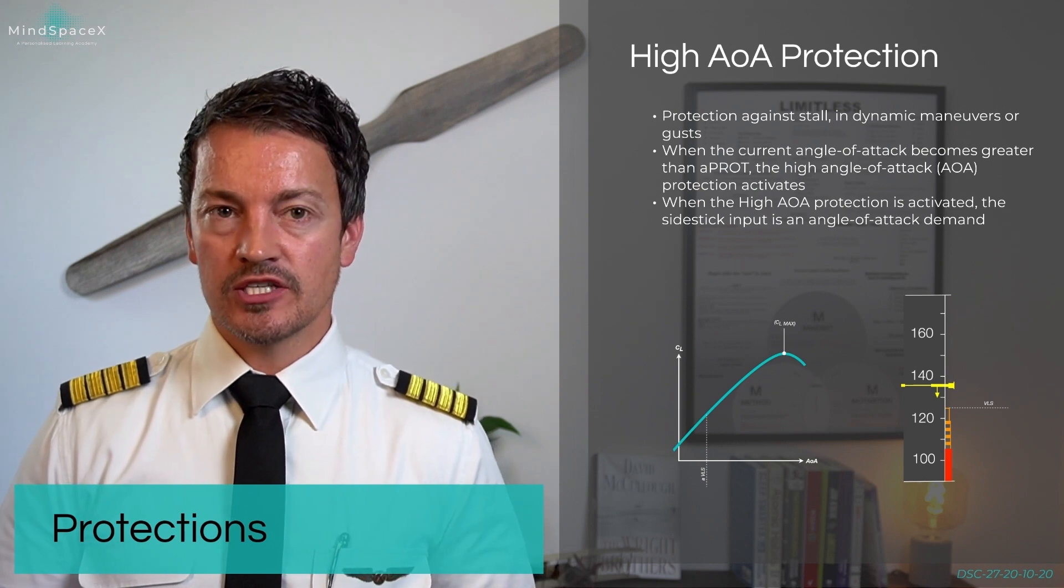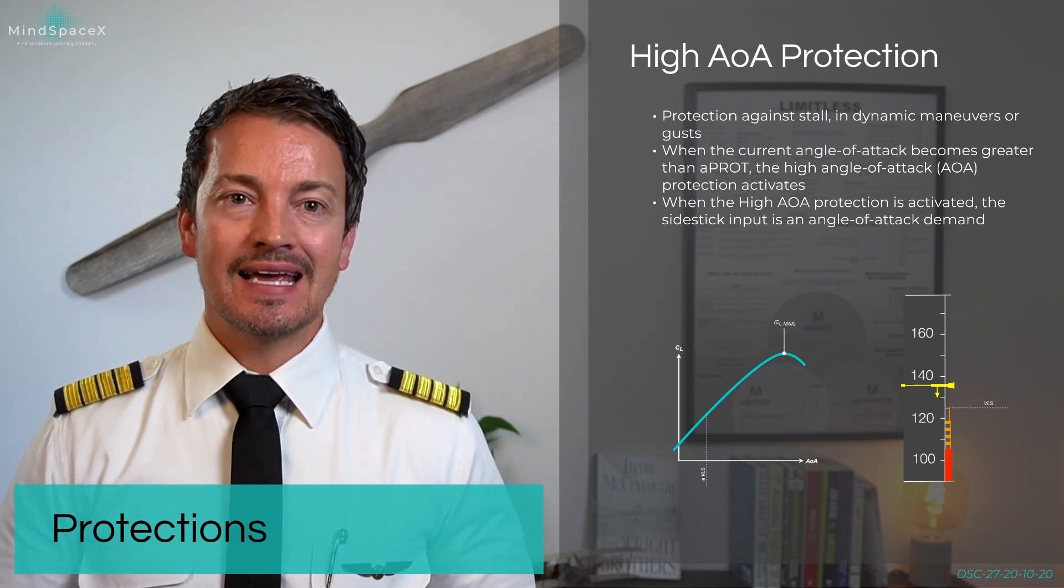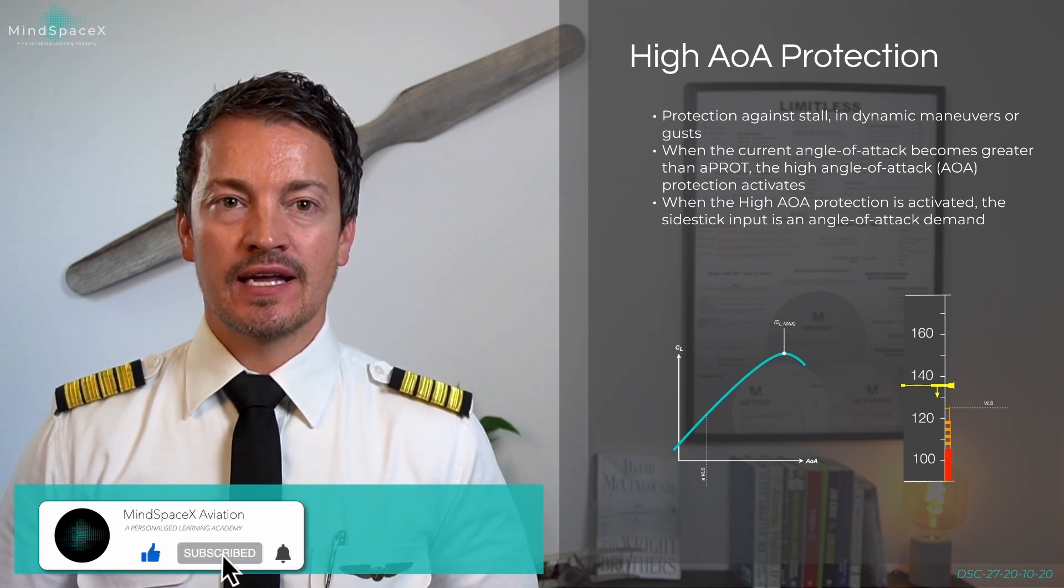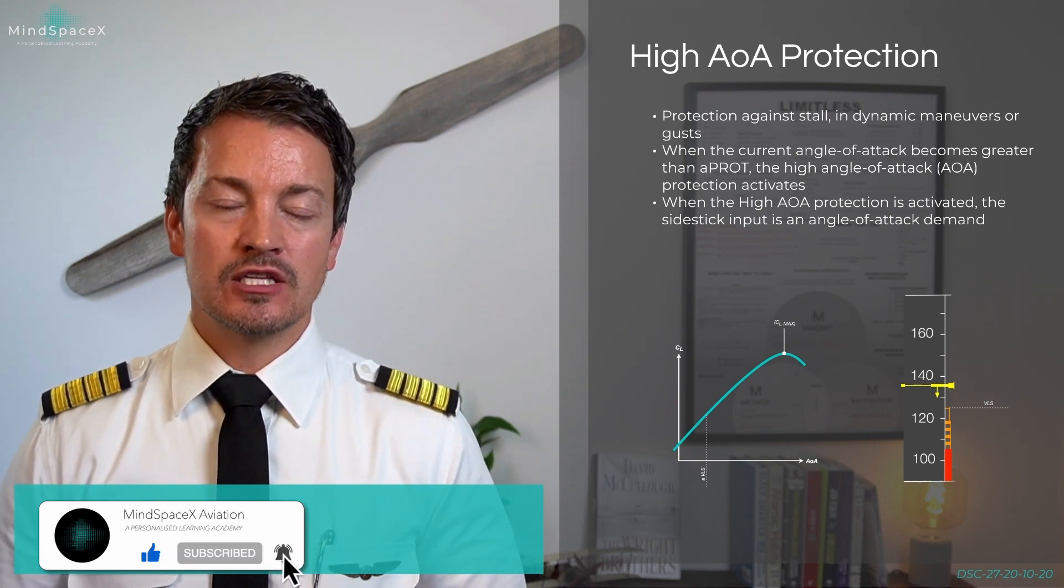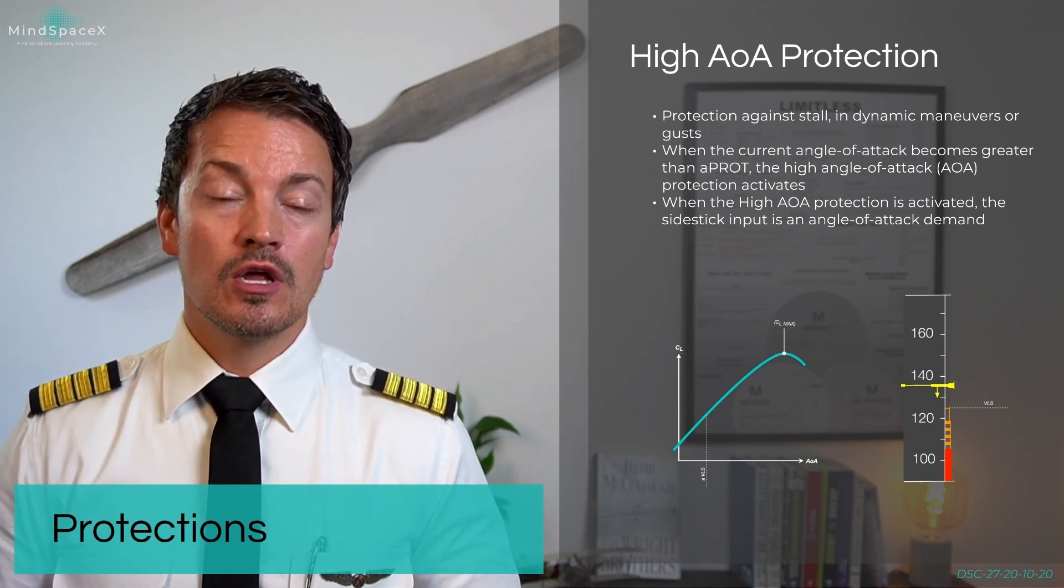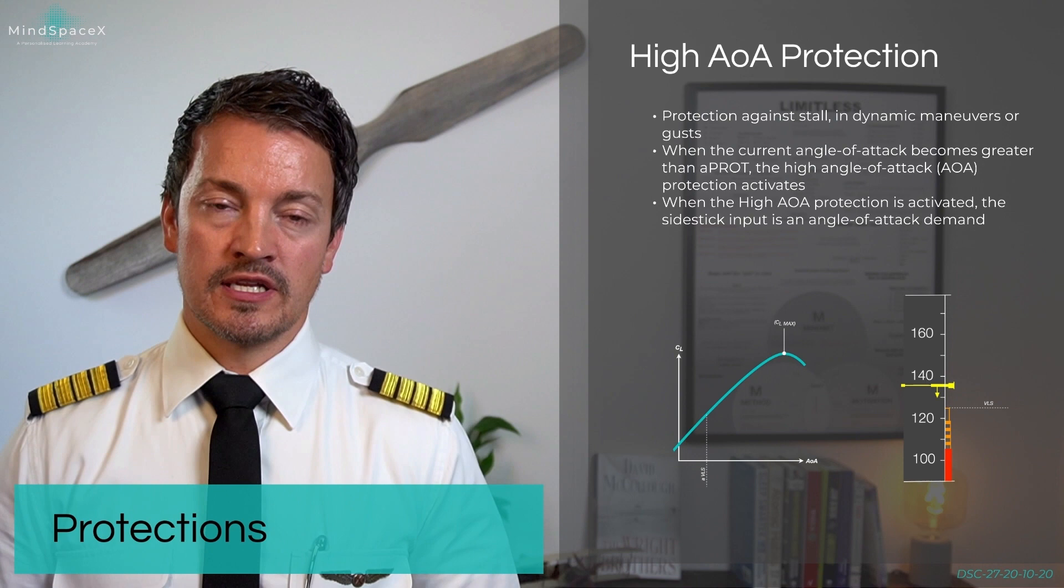The high angle of attack protection protects the aircraft against low speed and stall. This protection is available to the pilots but does not eliminate the pilots from having to exercise normal judgment when it comes to stalling the aircraft.